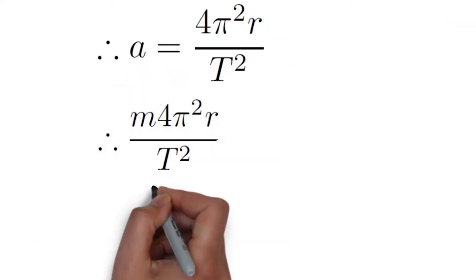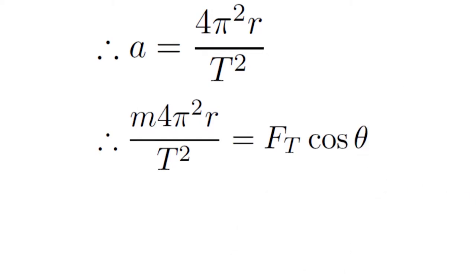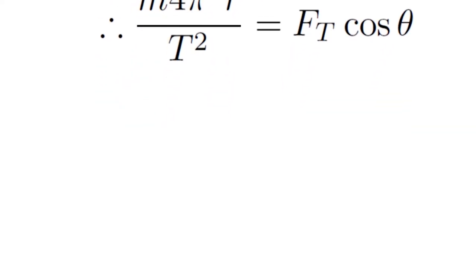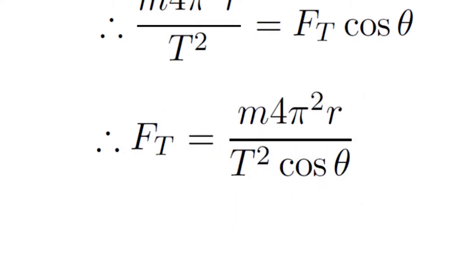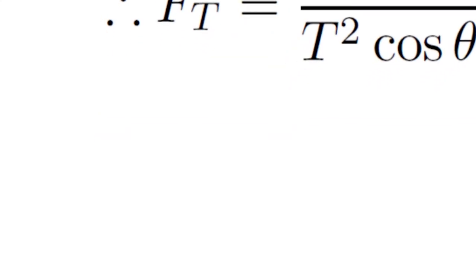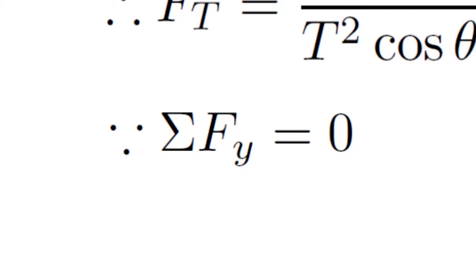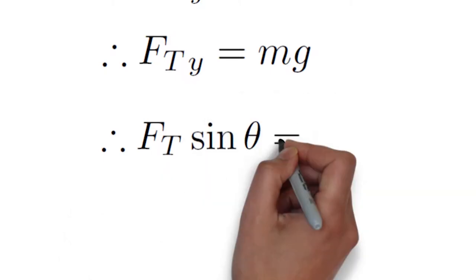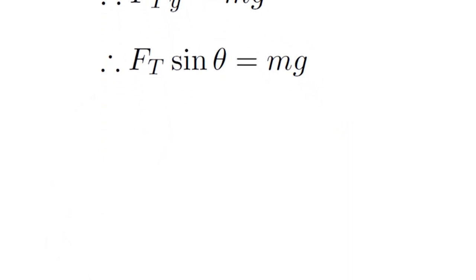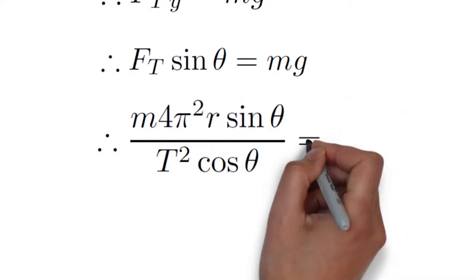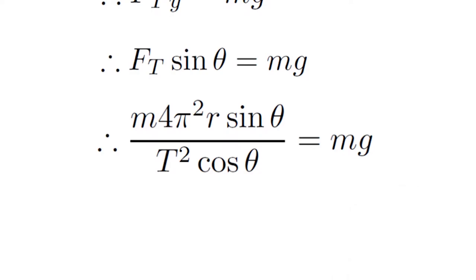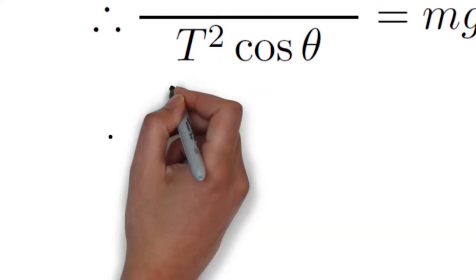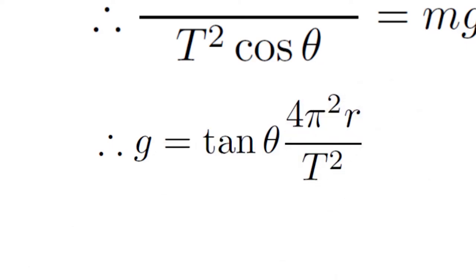We can restate this as 4π² times mass over the period squared equals the tension force in the x-direction, or the total tension times cosine of theta. Rearranging, the force of tension equals mass times 4π² times radius over the period squared times cosine of theta. We also know the forces in the y-direction equal zero because the plane moves in a perfect horizontal circle. Therefore, tension times sine of theta equals mg. Combining these equations and simplifying, g equals tan(theta) times 4π² times radius over the period squared.